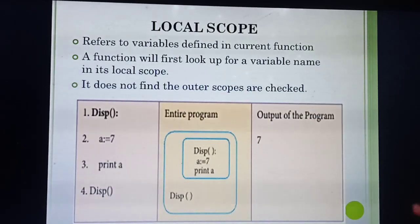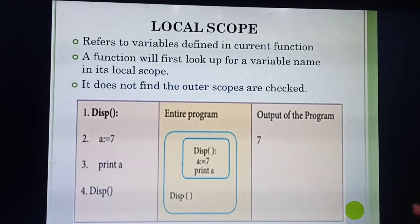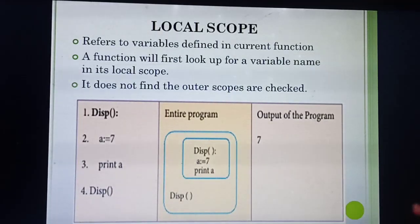While running the program, the interpreter will always look for the variable name first inside the current function. If the variable name is not found inside the function, only then will it go to the outer scope — that is, outside of the function.